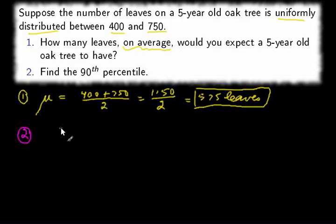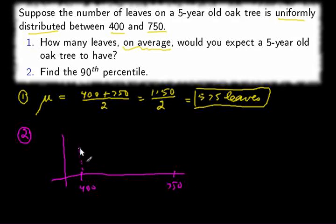And we can find that by sketching a nice graph of the situation. So we have our uniform distribution from 400 to 750 leaves. And it's a nice straight line because it's a uniform distribution with a height equal to 1 divided by the width. The width here is 350.